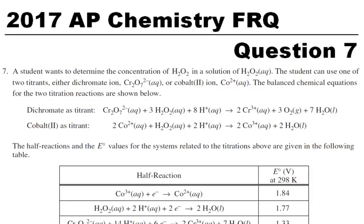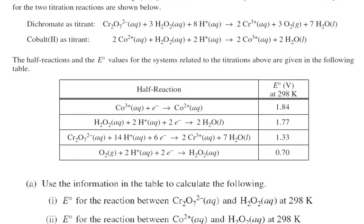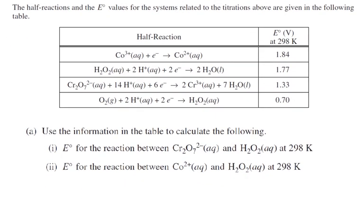We're looking at the 2017 AP Chemistry FRQ question number seven. This is our last four-point question. A student wants to determine the concentration of H2O2 in a solution of peroxide aqueous. The student can use one of two titrants, either dichromate ion or cobalt ion. The balanced chemical equations for the two titration reactions are shown below. The half reactions and the E° values for the systems related to the titrations above are given in this table.